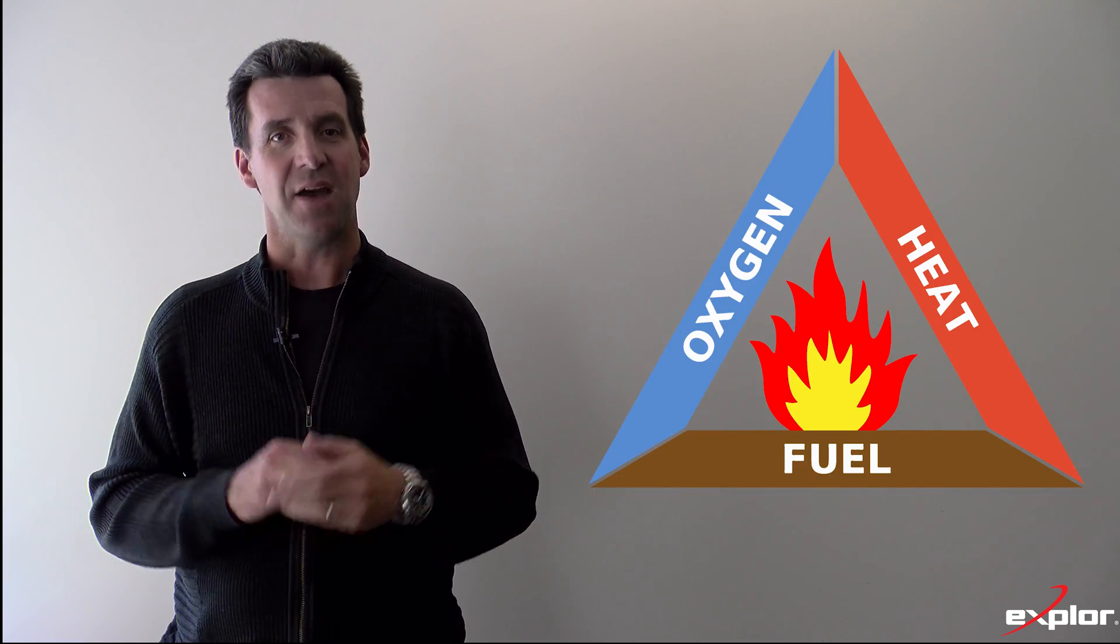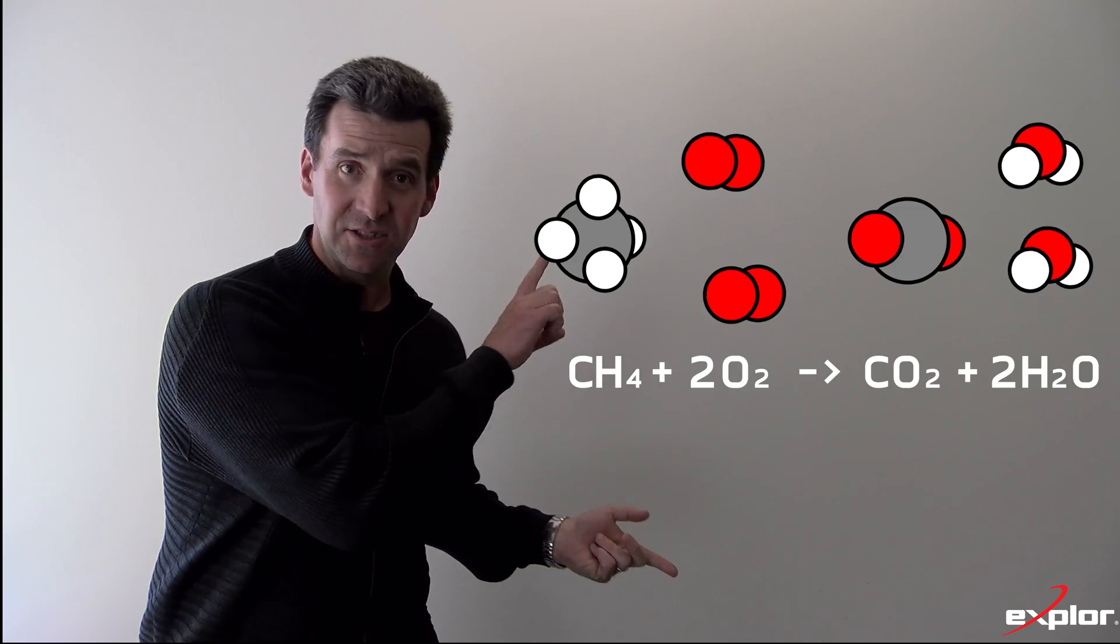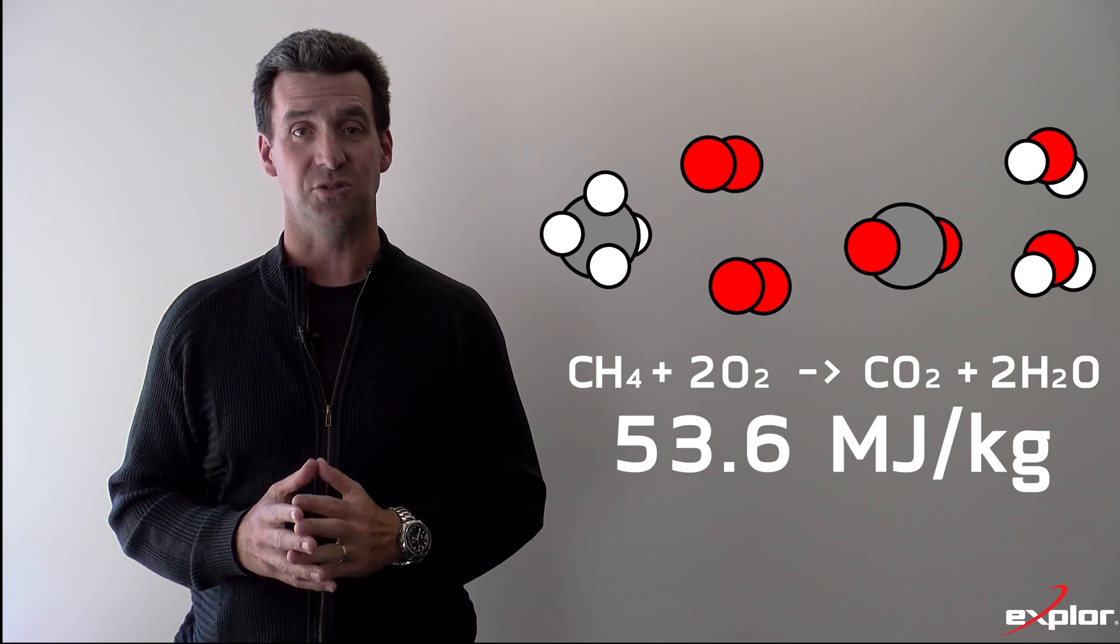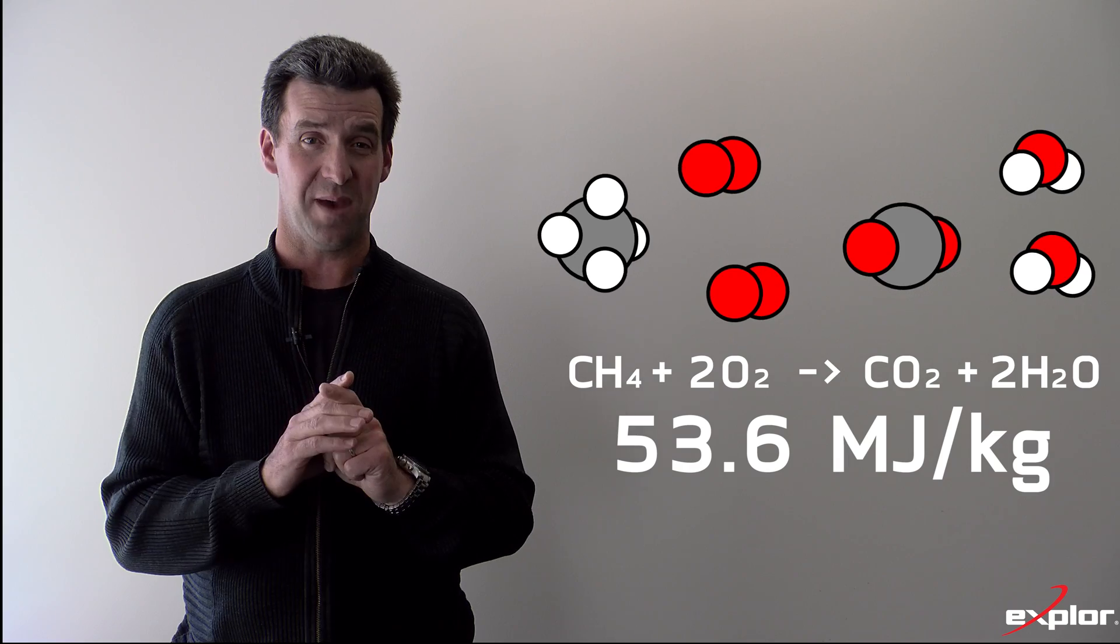From there, only one thing remains: combusting the methane. How does that work? Well, methane combusts in the presence of oxygen and heat to produce this chemical reaction. That chemical reaction produces about 53.6 megajoules of energy per kilogram of methane.